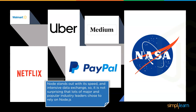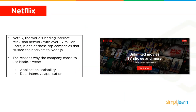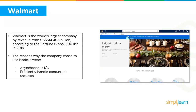Node.js stands out for its speed and intensive data exchange, and top industry leaders like NASA, PayPal, and Netflix incorporate it. Netflix, the world's leading internet television network with over 117 million users, chose Node.js for application scalability and data-intensive applications. Application scalability refers to the potential of an application to grow over time and efficiently handle more requests per minute, while data-intensive capability allows millions of people to stream Netflix simultaneously.